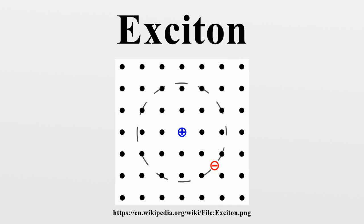Excitons are the lowest excited states of the electronic subsystem of pure crystals. Impurities can bind excitons, and when the bound state is shallow, the oscillator strength for producing bound excitons is so high that impurity absorption can compete with intrinsic exciton absorption even at rather low impurity concentrations. This phenomenon is generic and applicable both to large-radius excitons and molecular excitons. Hence, excitons bound to impurities and defects possess giant oscillator strength.